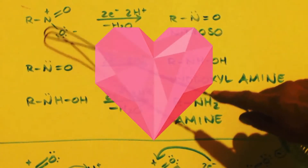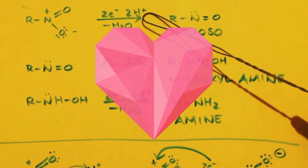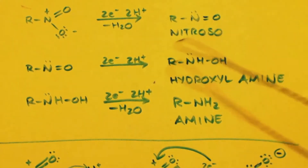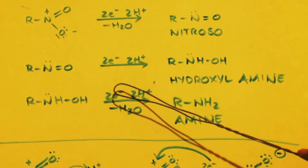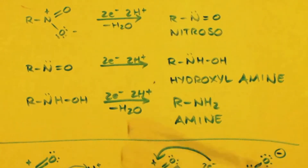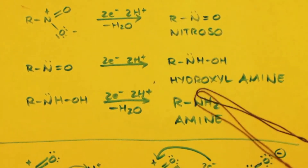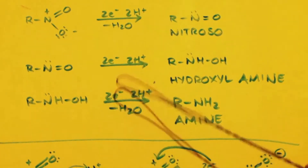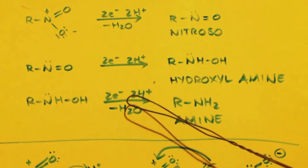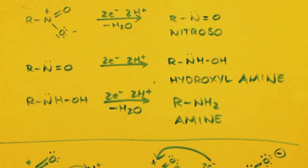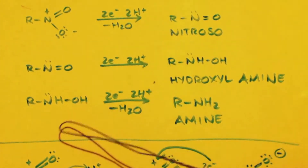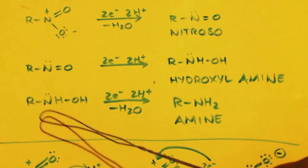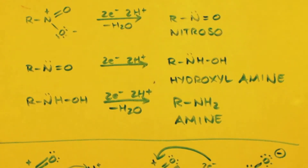You start out with your nitro group. You add two electrons, two protons, minus water, and you get your nitroso. You take that and again add two electrons and two protons — this time no loss of water — and you get your N-substituted hydroxyl amine. Then you take your hydroxyl amine and again add two electrons, two protons, and this time you lose water again. A proton goes to the water, it comes off, and another proton comes on after you get your electrons on. So you end up with your NH2. That's the generic equation.